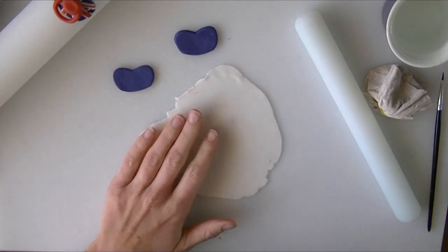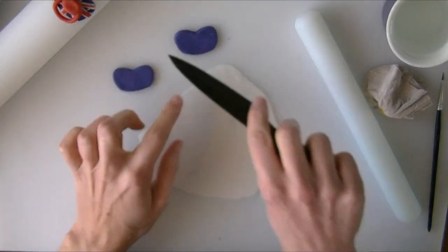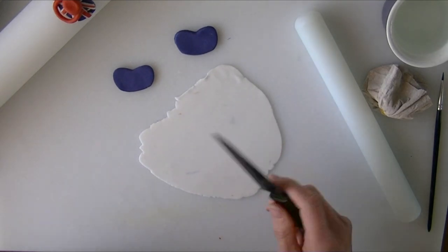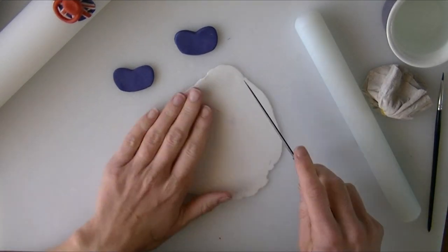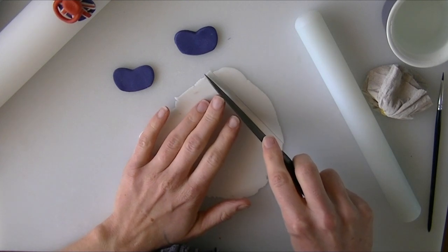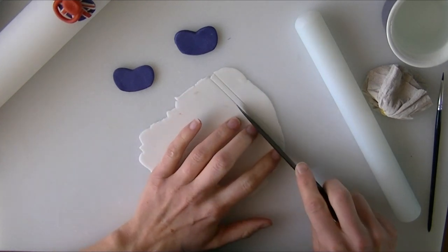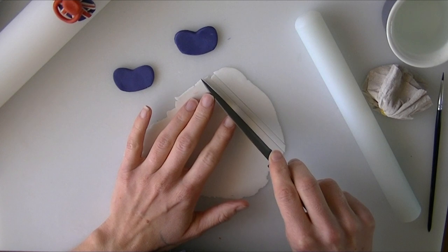I'm going to just cut strips off it. I want a slightly thicker strip for our cross that goes across the middle and then a little bit thinner for the diagonal lines. We'll cut two to make sure we have plenty.